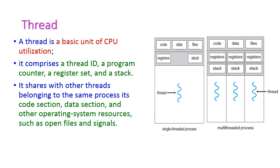A thread is a very basic unit of CPU utilization — a very small quantity of code that will execute on the CPU. Every thread has its own thread ID, program counter (PC), register set, and stack. Here we have two thread models: the first is single-threaded process and the second is multi-threaded process.